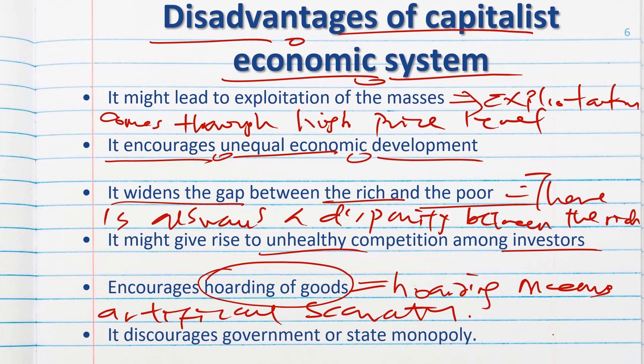Lastly, in a capitalist economic system, government monopoly is discouraged — the government having total control is actively discouraged. This brings us to the end of this lesson. See you in our next lesson.